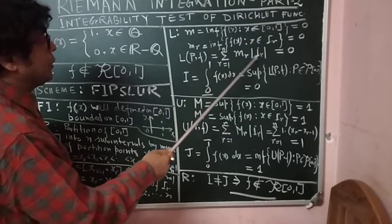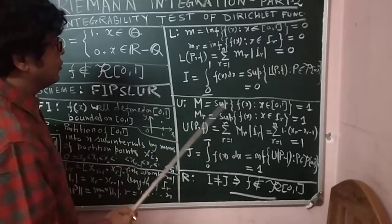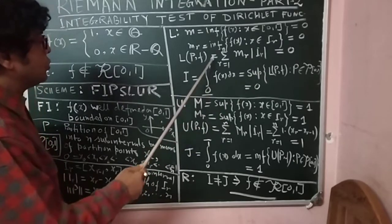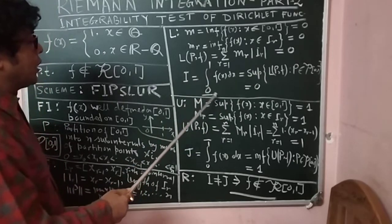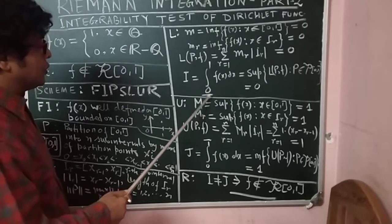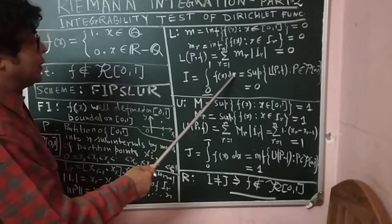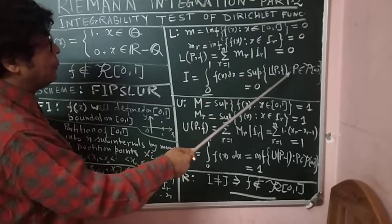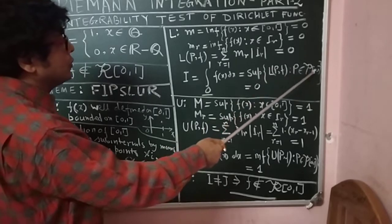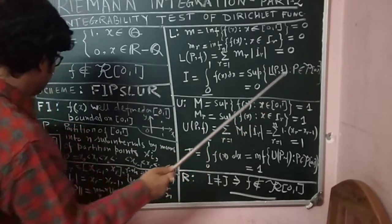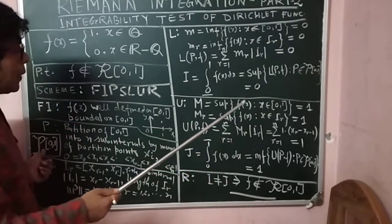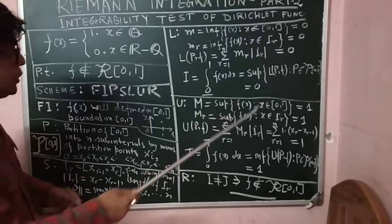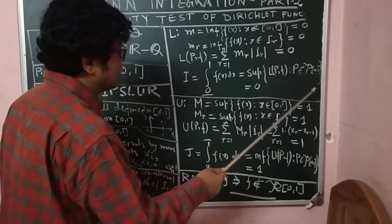So the lower integral, denoted by the lower bar integral of f(x) dx from 0 to 1, is defined as the supremum of L(P, f) such that P belongs to script P[0,1] — the set of all partitions of [0,1] into n sub-intervals. Since L(P, f) = 0 for all partitions, the lower integral I = 0.